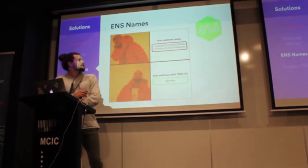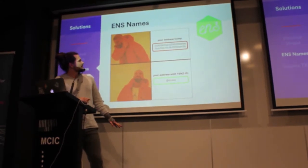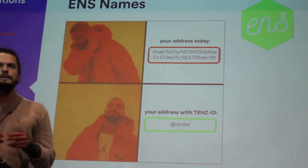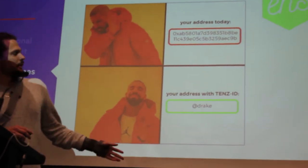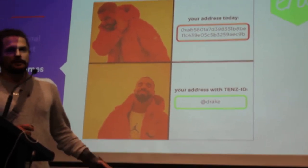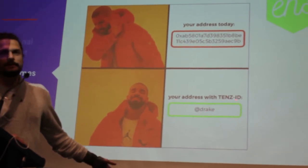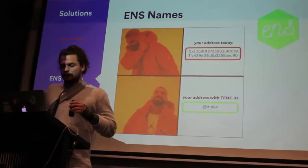We've gone a step further and said this wallet has a public address, but this is what we want it to look like. You don't go to a website and type in the IP address to access it — you type in a URL, like TenZone.org or Ethereum.org. So we want it to be a lot like your email address or your Twitter handle. You just have to type in someone's name and you can verify that public address. It's a lot more approachable.